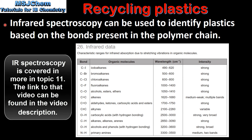Infrared spectroscopy can be used to identify plastics based on the bonds present in the polymer chain. Table 26 in the data booklet contains infrared data, including the type of bond and the range of the infrared absorption.